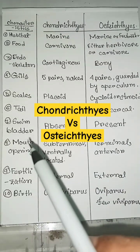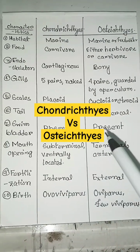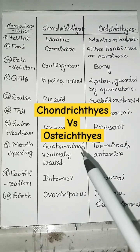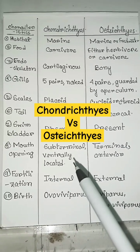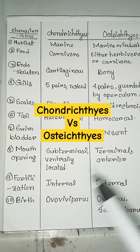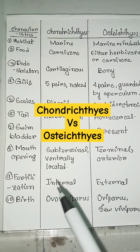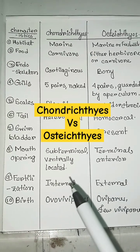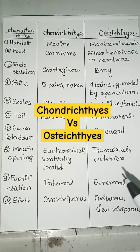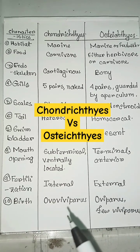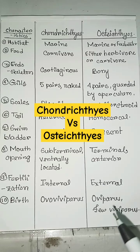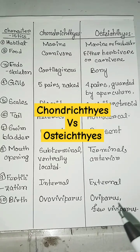Swim bladder — absent in Chondrichthyes, but present in Osteichthyes. Mouth opening — subterminal and ventrally located in Chondrichthyes, but terminal and anterior in Osteichthyes. Fertilization — internal in Chondrichthyes, but external in Osteichthyes.